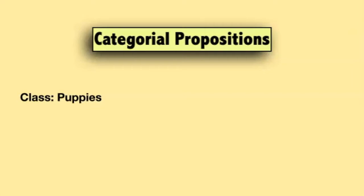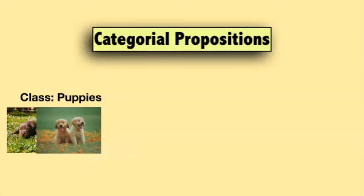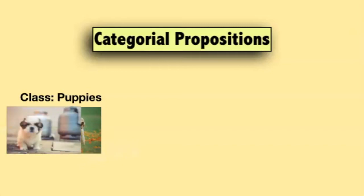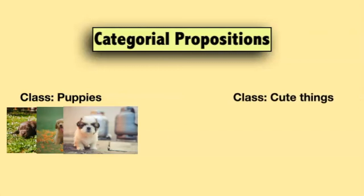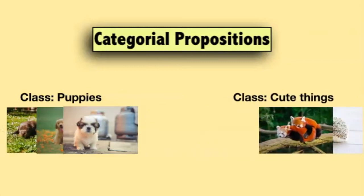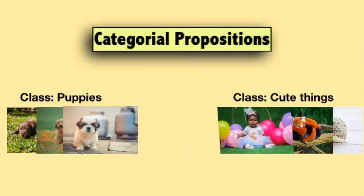The class puppies includes all puppies, like these, and these, and this cute little guy. The class cute things includes all cute things, including baby hedgehogs, red pandas, and cute kids, in addition to puppies of course.